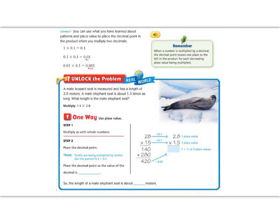But if we start multiplying by decreasing powers of 10, then our decimals are going to move to the left because our numbers are getting smaller. So let's use that pattern to unlock the problem. It says a male leopard seal is measured and has a length of 2.8 meters. A male elephant seal is about 1.5 times as long. What length is the male elephant seal?